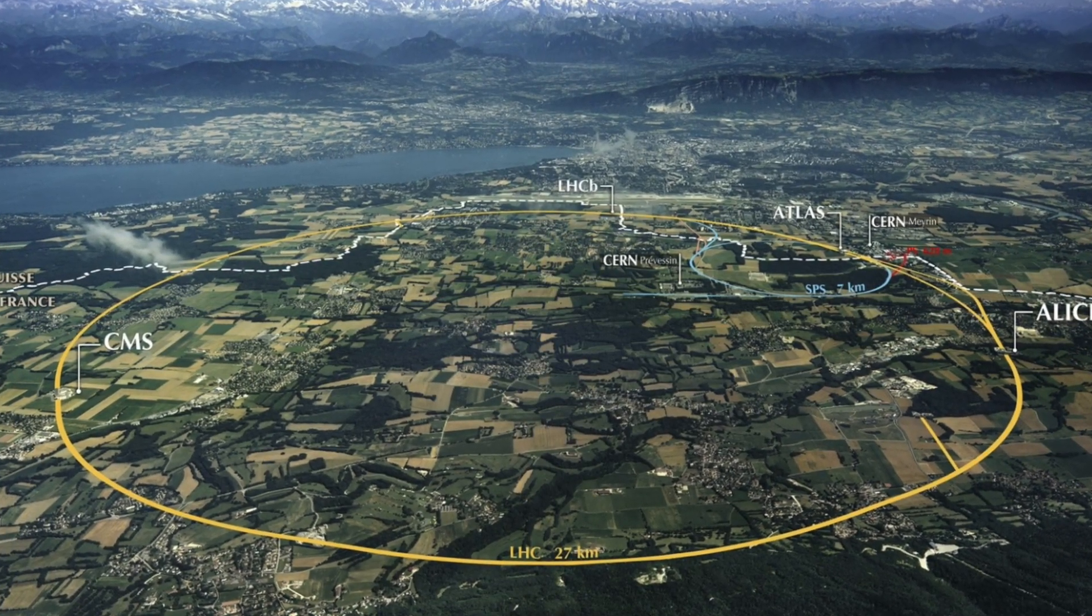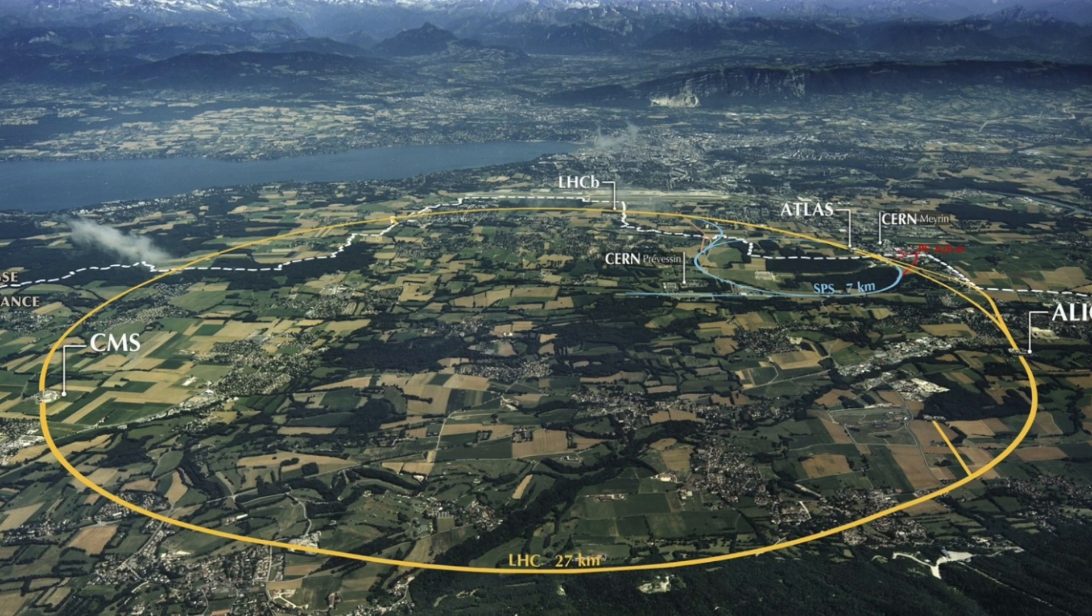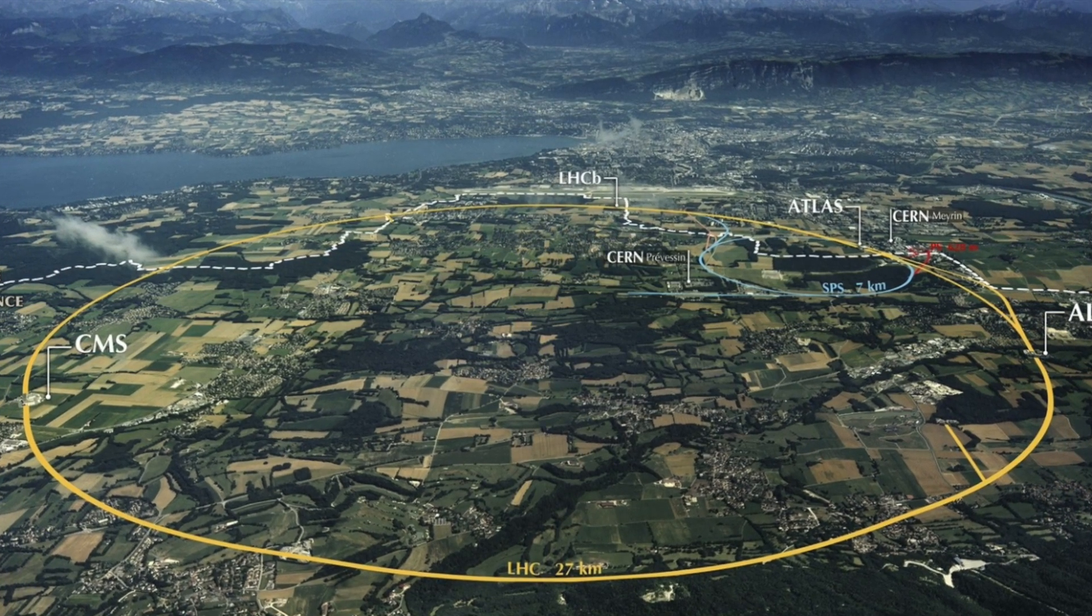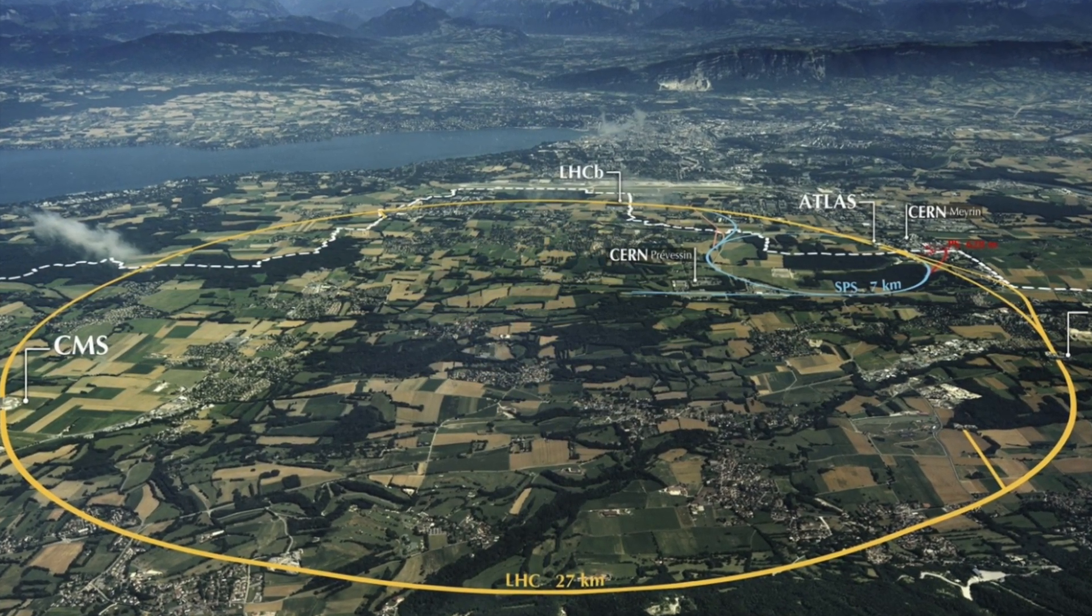The Large Hadron Collider can be found 17 miles underneath the border of Switzerland and France. It's currently the world's largest and most powerful particle accelerator.